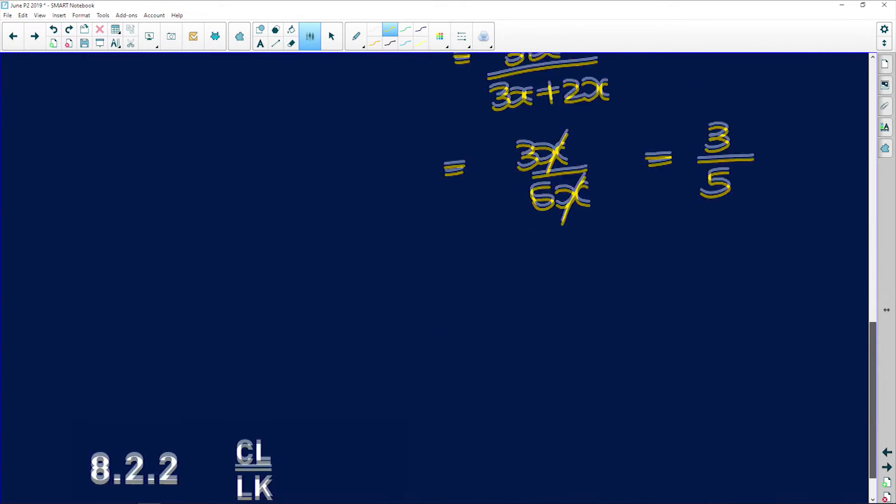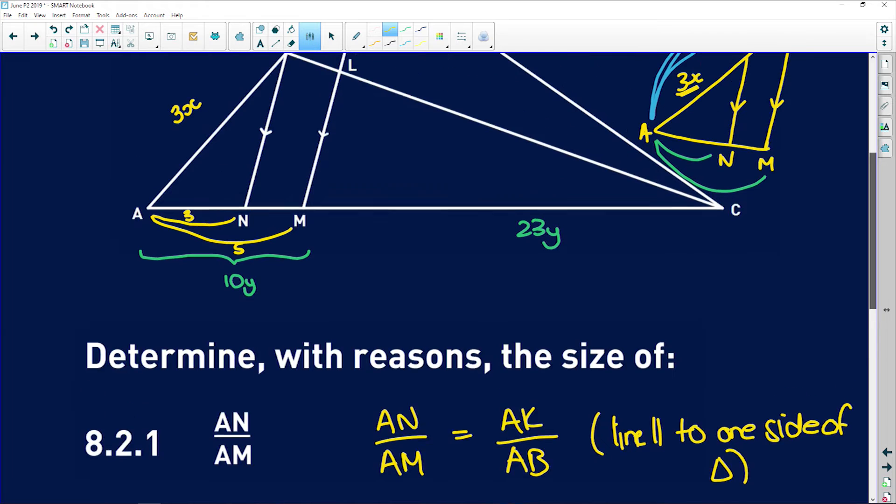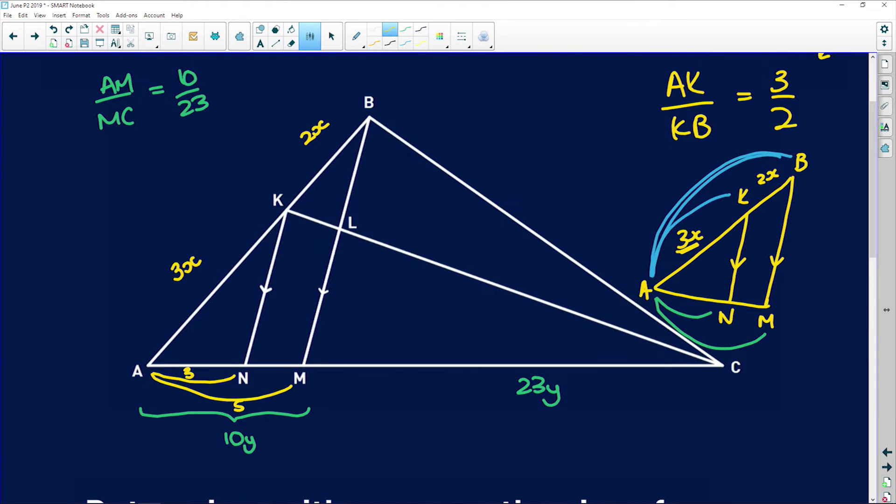So 8.2.2 says, determine the ratio of CL to LK. So CL is over here and LK is there. So now we need to find, or we need to use the ratio that we've just found and implement it into one of the sides.